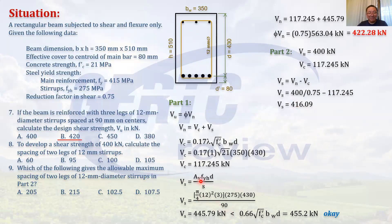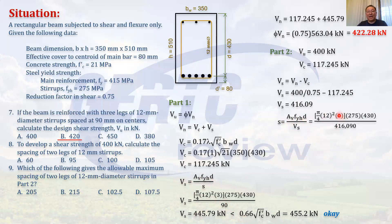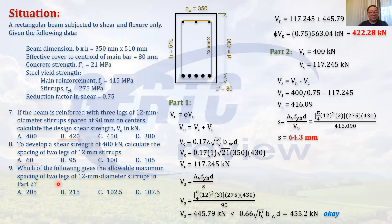Now, what is the spacing? Our Av is for two legs only this time. Using the formula S = Av · fy · d / Vs, with Av for two 12 mm legs, and Vs = 416.09 kN, we get S. It must not exceed 64.3 mm, and your answer must not be more than that. So the answer is letter A.